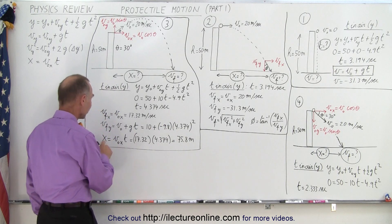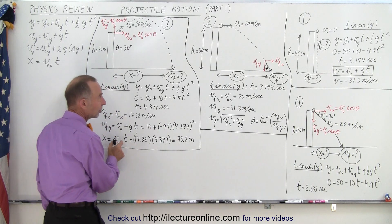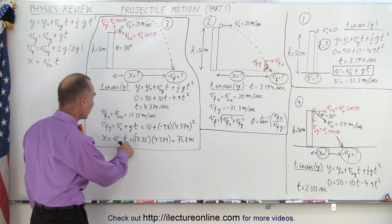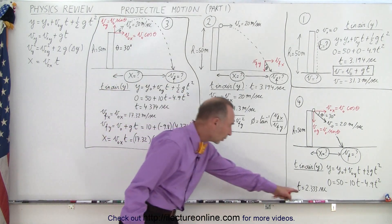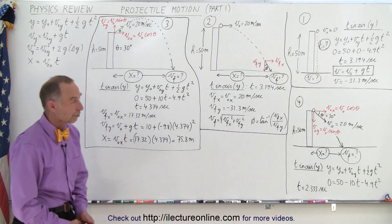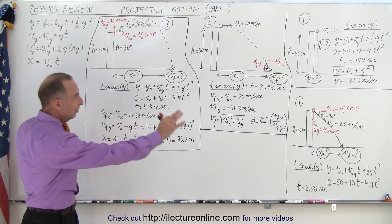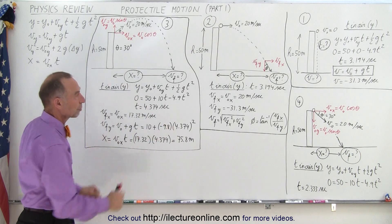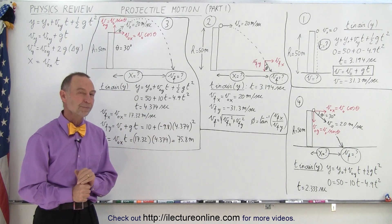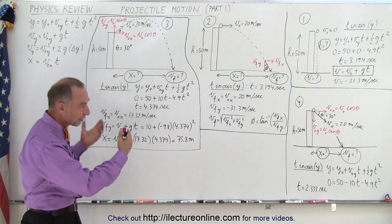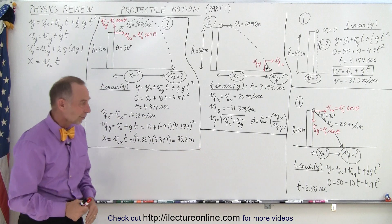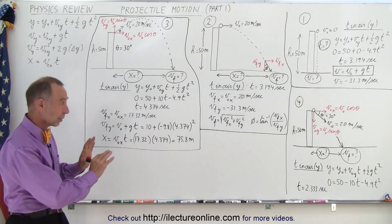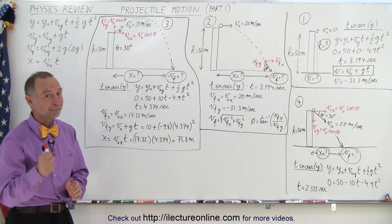For the distance traveled, we again use the initial x-velocity — 17.32 meters per second, which is v-initial times cosine 30 — multiplied by the time in the air, which in this case is only 2.33 seconds, so it doesn't go as far. If you can see how these problems are tied together, how common and similar the approach is, you'll have a very good basis for understanding projectile motion. We'll now show Part 2, with different examples — projectiles launched from the ground or from some height needing to clear walls — and those will be very similar to what we just saw.